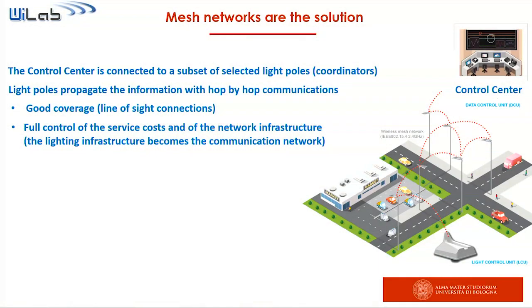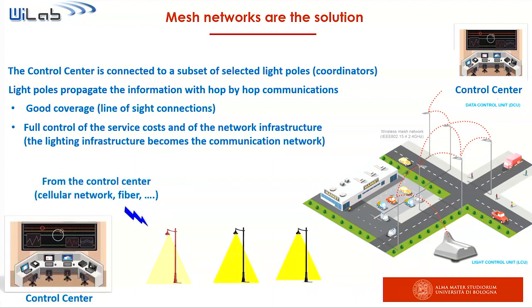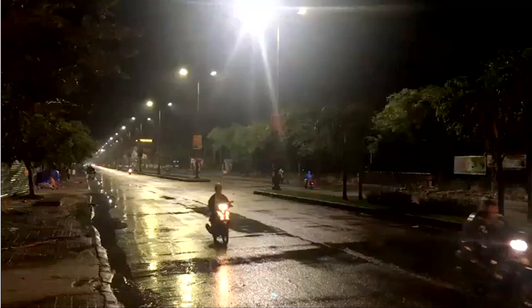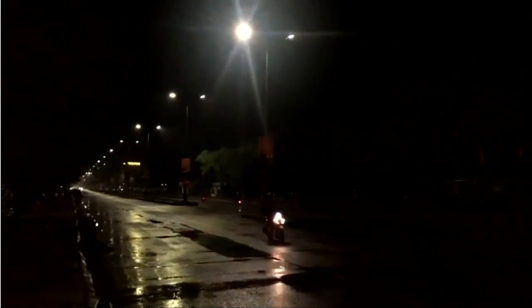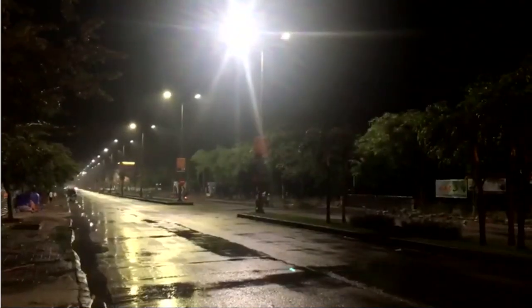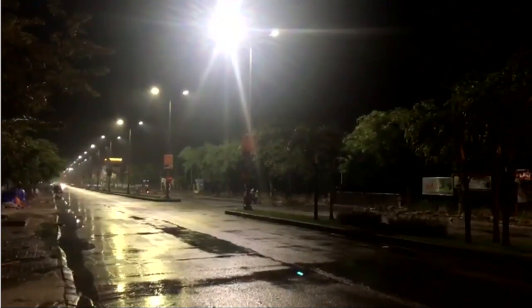Moreover, the lighting operator has full control of the service cost and the network infrastructure because the lighting infrastructure itself becomes the communication infrastructure. The control center sends the command to the coordinator, then coordinator to its neighbor, and so on. This is an example of a real implementation in Vietnam where Y4B has implemented this technology. As you can see, the dimming is very synchronous and the information propagates pole by pole.